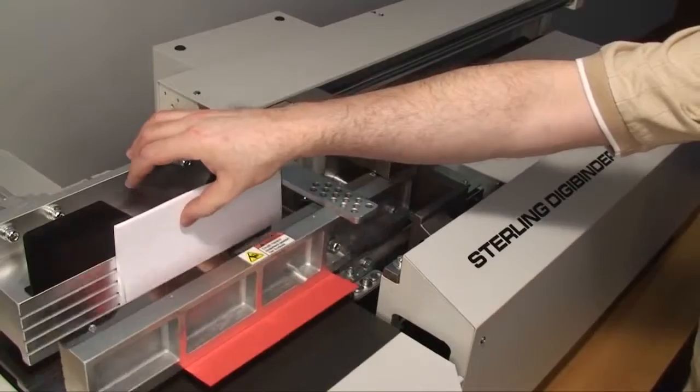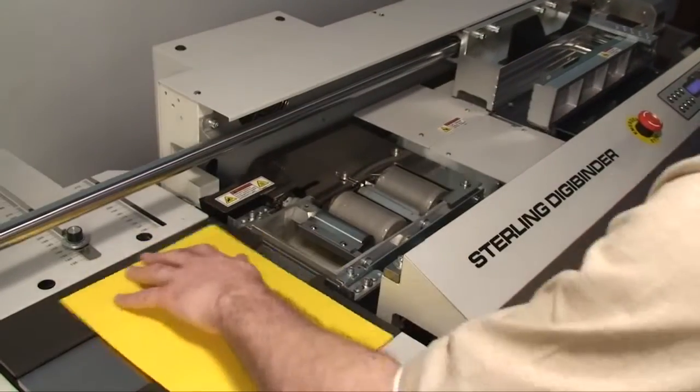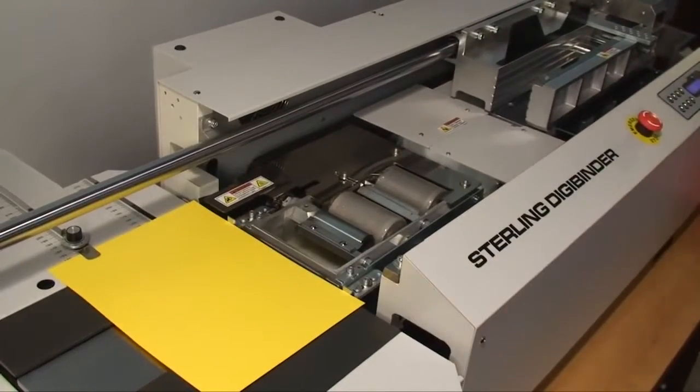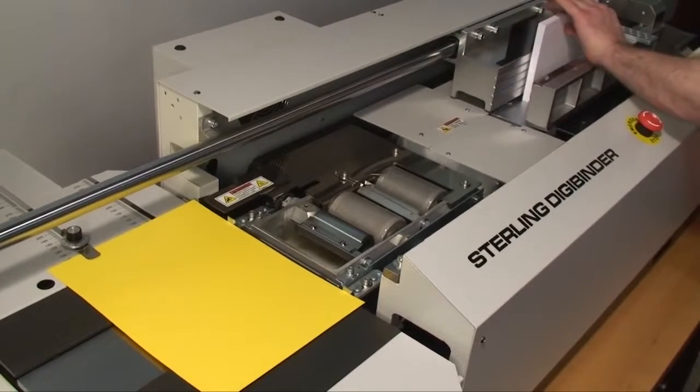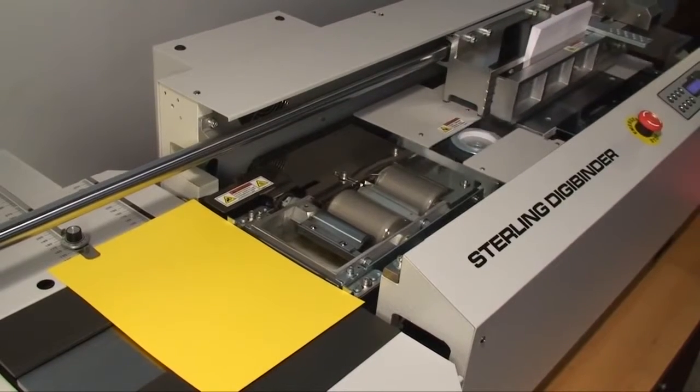Go from thin books to thick books without any adjustments. Just place the cover on the nipper table, put the book block in the clamp, and push the start button. The DigiBinder does the rest.